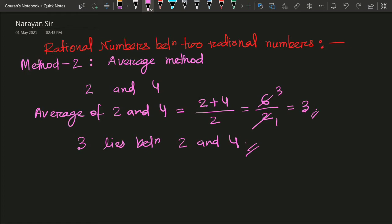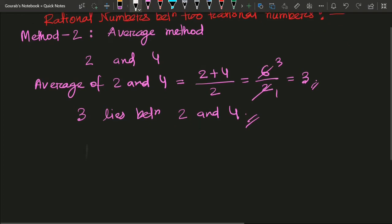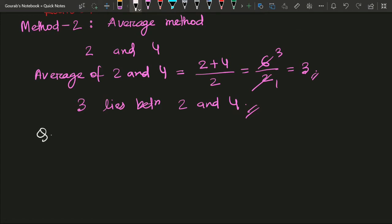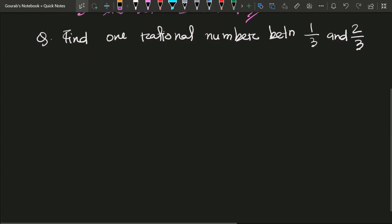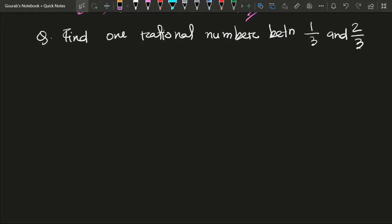We will use this as a method to find a rational number between two rational numbers. So let us take a question: find one rational number between 1 by 3 and 2 by 3. For that, we will first find the average of 1 by 3 and 2 by 3.